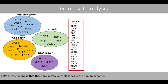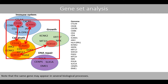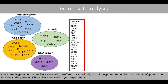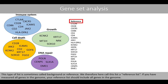Let's further suppose that there are in total only 20 genes in the human genome. Note that the same gene may appear in several biological processes. Our example genome therefore consists of only 20 unique genes. Remember that this list of genes should include all the genes which you have analyzed in your experiment. This type of list is sometimes called background or reference. We therefore call this list a reference list. If you have measured all genes in the genome, your reference list should include all genes in the genome.